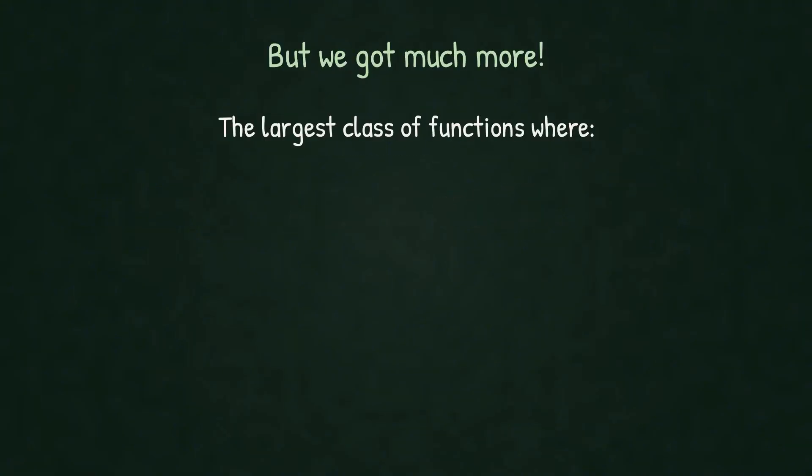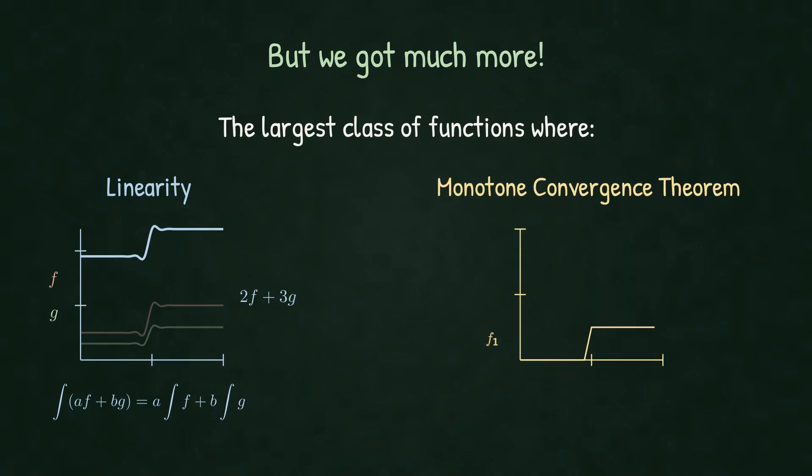We set out to fix a problem with the Riemann integral. But what we gained was the largest possible class of functions for which two key properties hold together. Linearity: the integral of a linear combination equals the linear combination of the integrals. Both Riemann and Lebesgue have this. And the monotone convergence theorem: if functions increase to a limit, their integrals increase to the integral of the limit. Watch the step functions approximate the parabola. The integral of f1 to f2 to f3 to f4 converges to the integral of the limit.